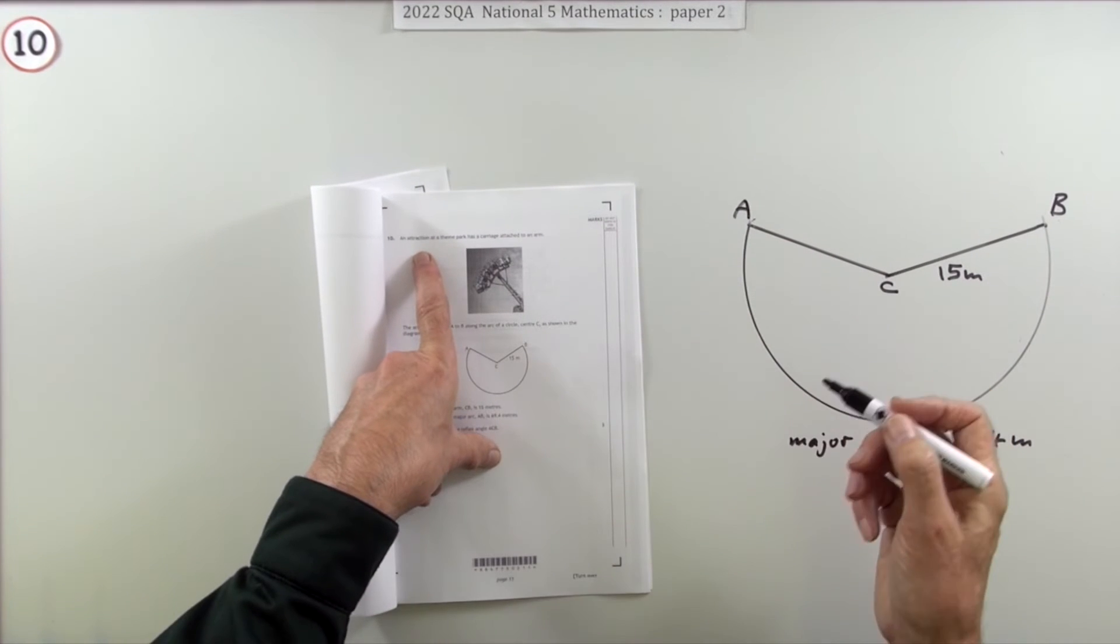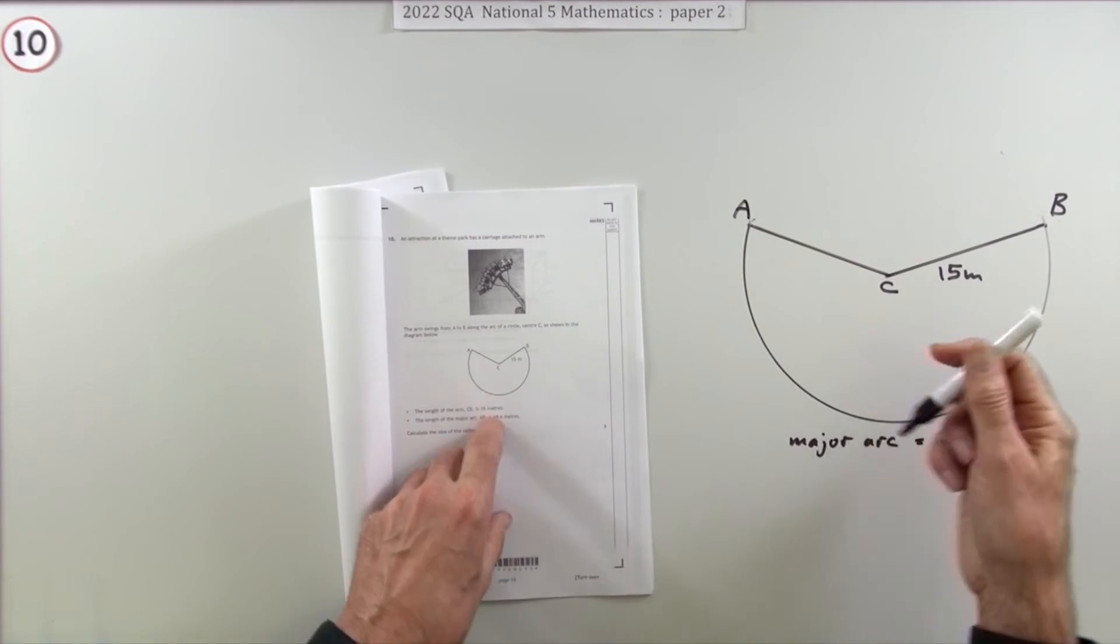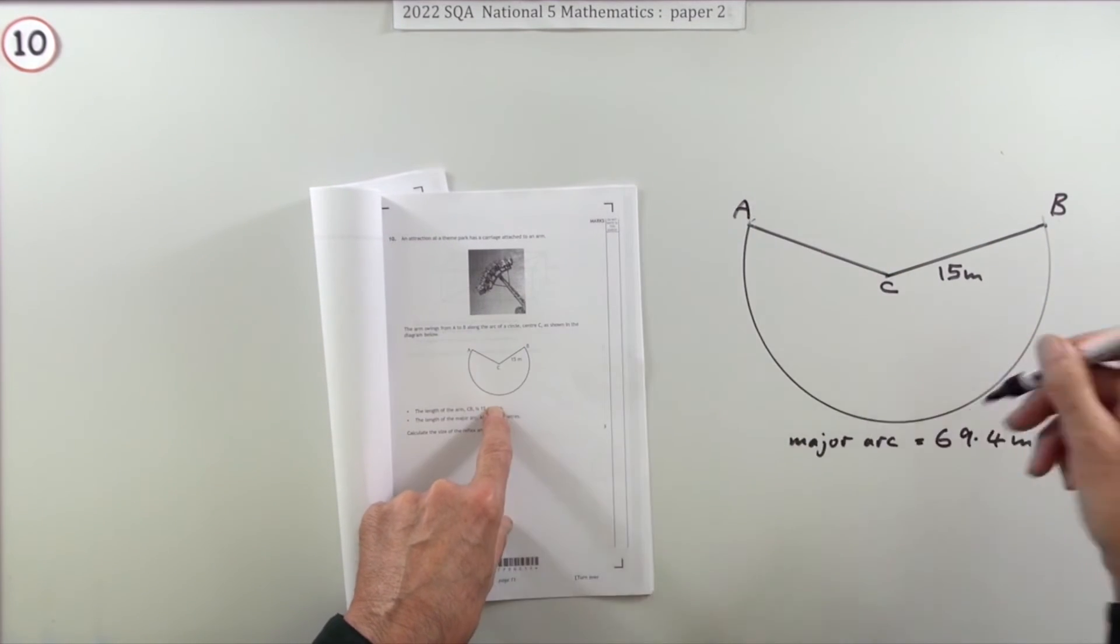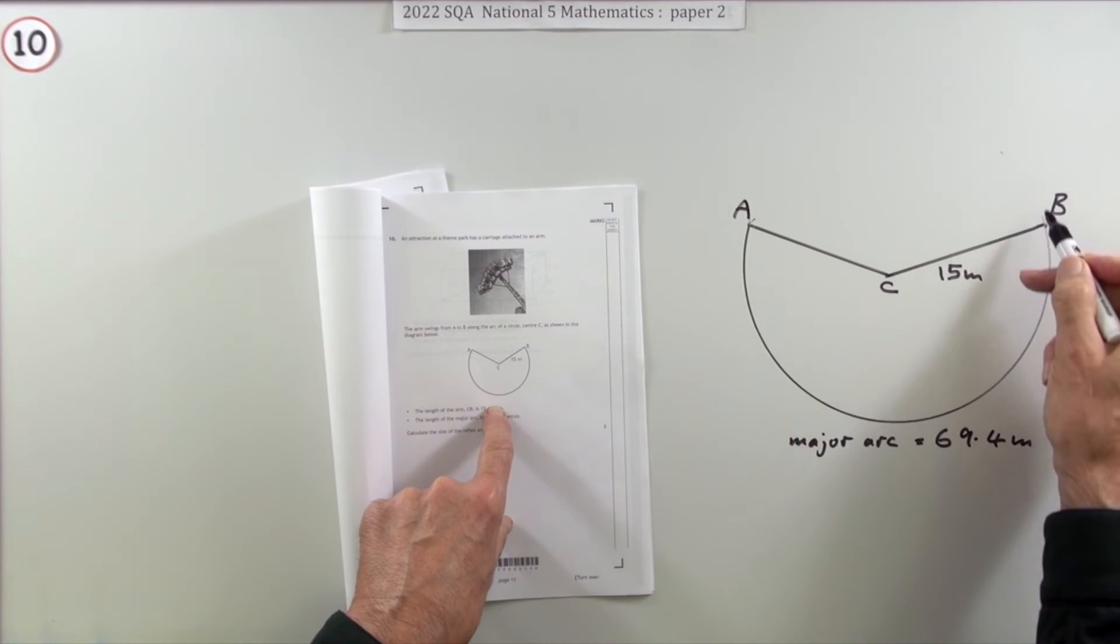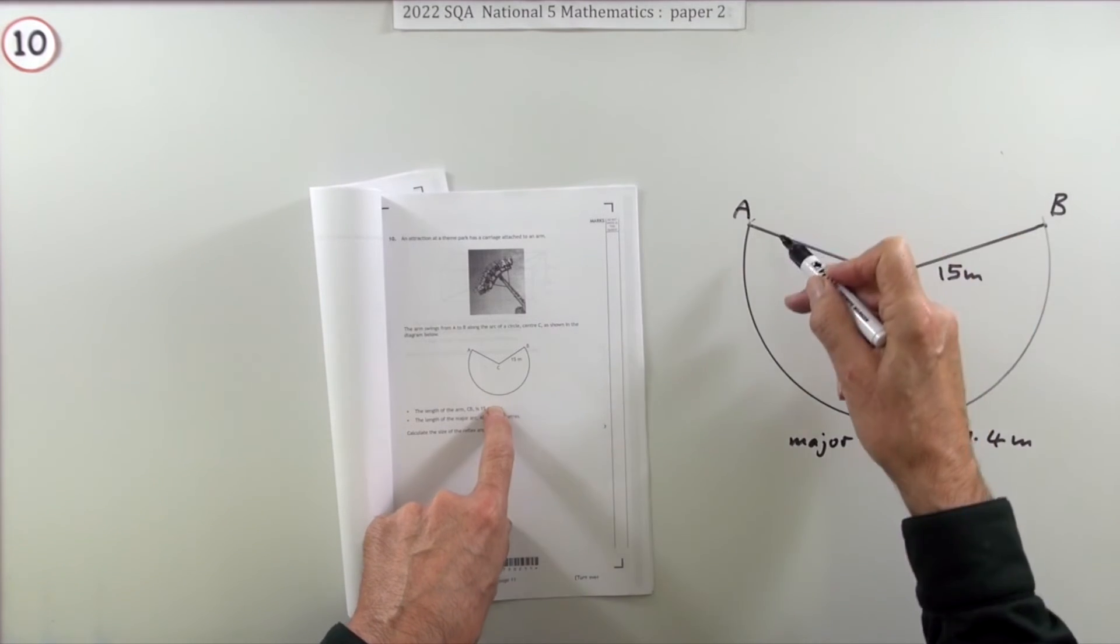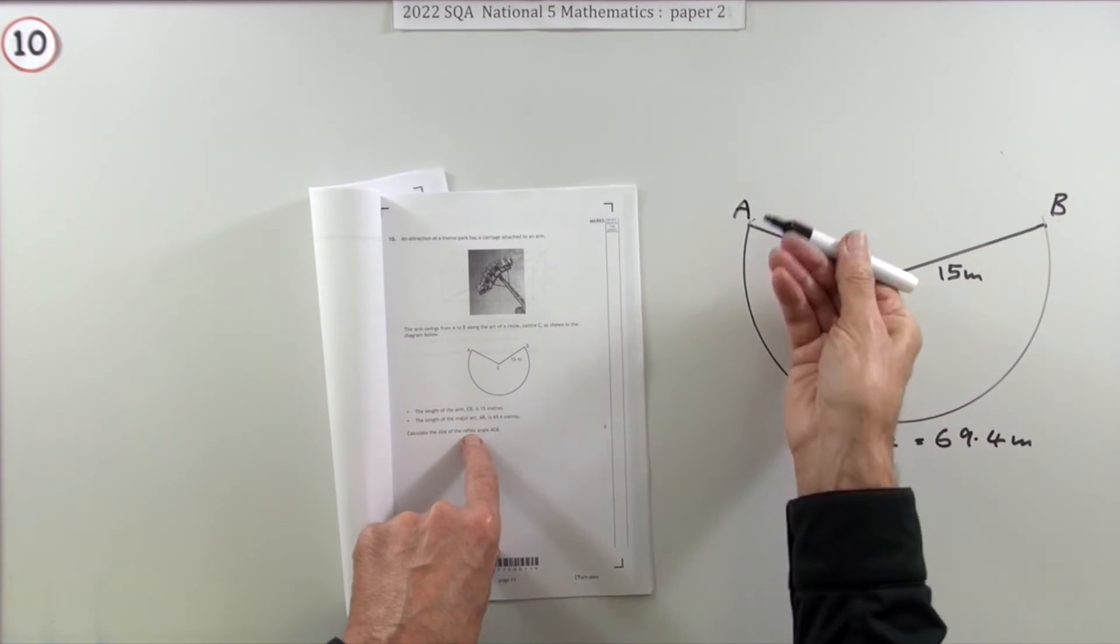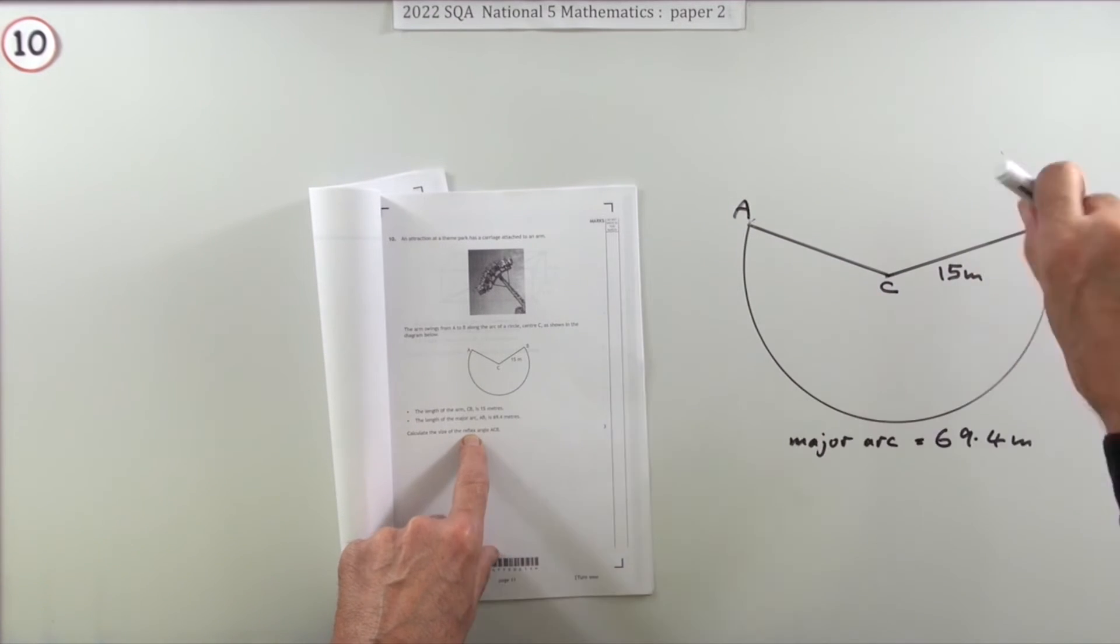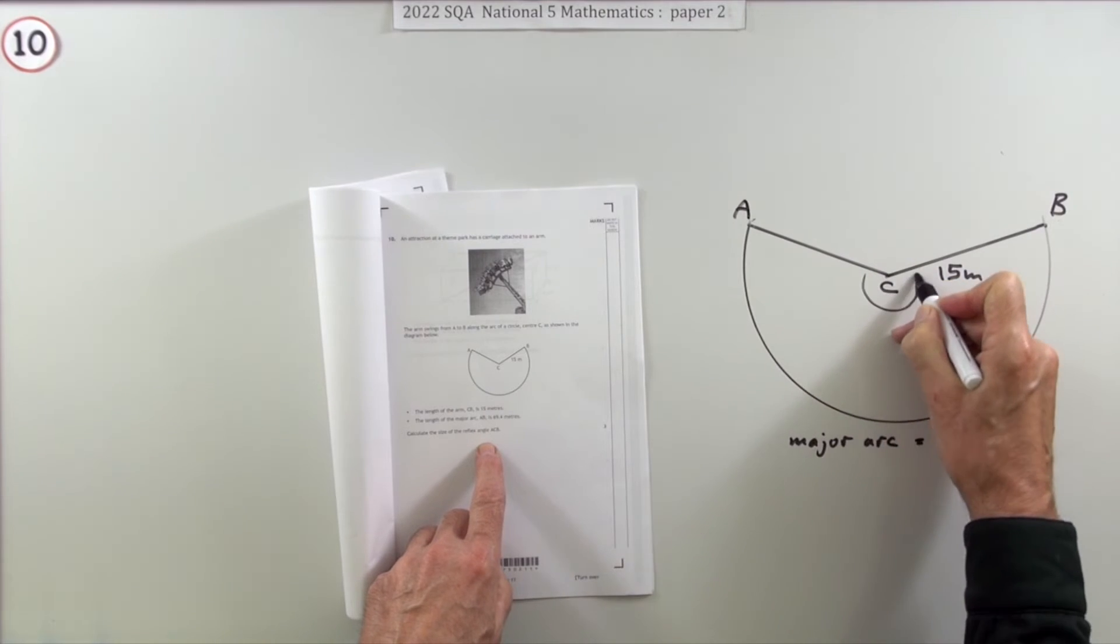An attraction at a theme park has a carriage attached to an arm of length 15 meters, and it swings through this major arc - the major arc being the long way round between the two points rather than the short way. So you've got a reflex angle, an angle more than 180, and you've just to work out the size of this reflex angle here.